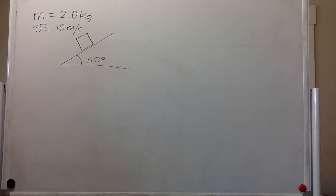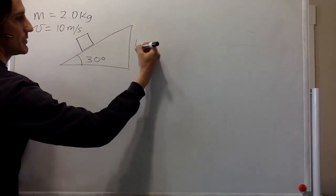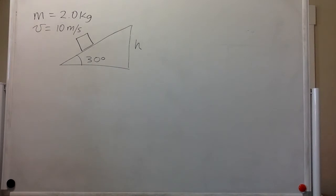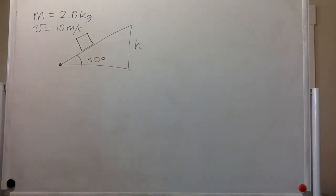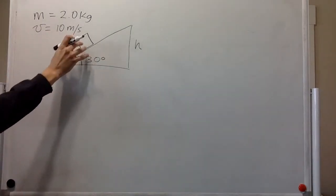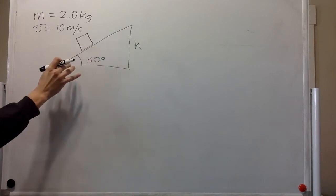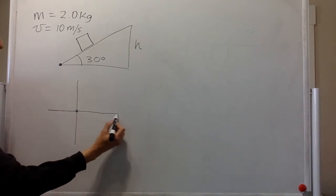Initially in the first case there is no friction, and the question is: what is the vertical height that the block is going to reach from its starting point? So first we have our pictorial representation and we can go right away to the free body diagram.